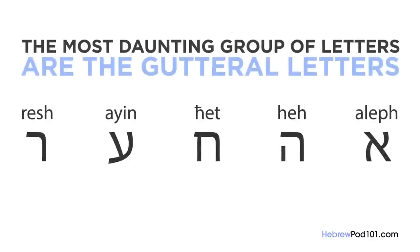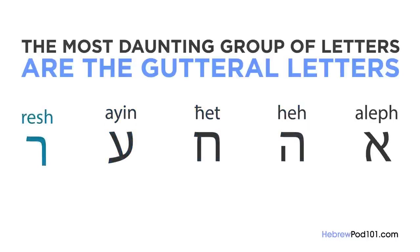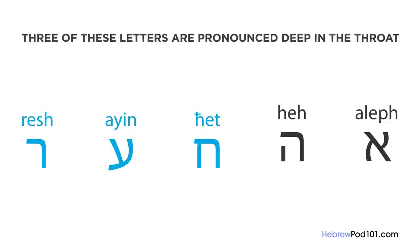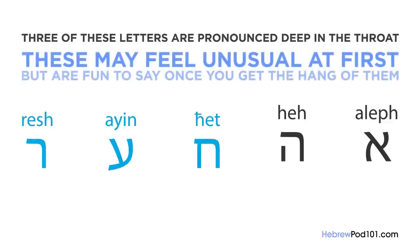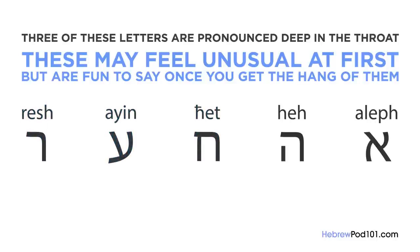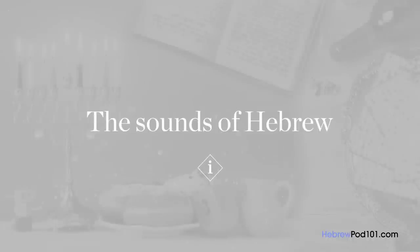The most daunting group of letters are the guttural letters. Three of these letters are pronounced deep in the throat. These may feel unusual at first, but are fun to say once you get the hang of them. Most of the sounds in Hebrew are already sounds you use in English, meaning that if you simply imitate a Hebrew speaker, your pronunciation would be correct a lot of the time.